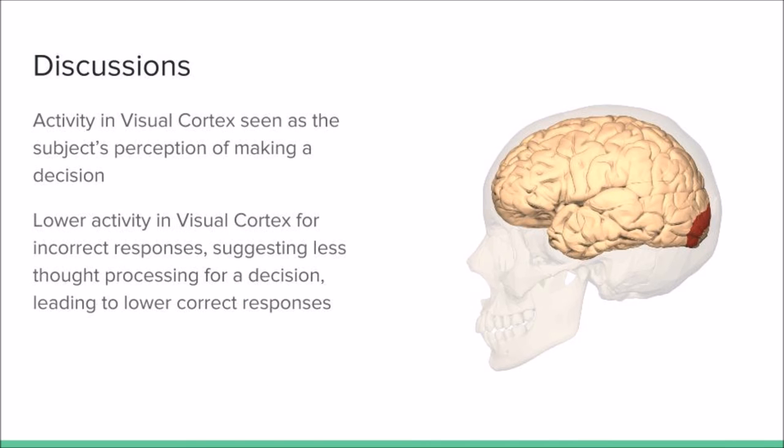The fMRI imaging during the dot discrimination test shows that the visual cortex is highly activated. This is interpreted as the subjects' perception of dot stimuli and for their decision-making processing of the dot stimuli.